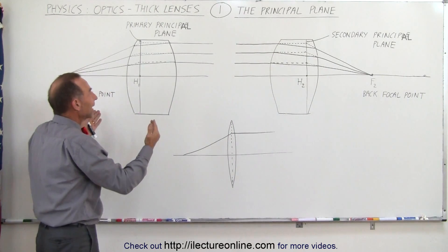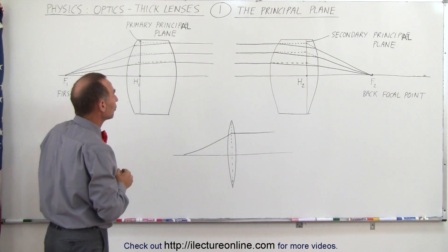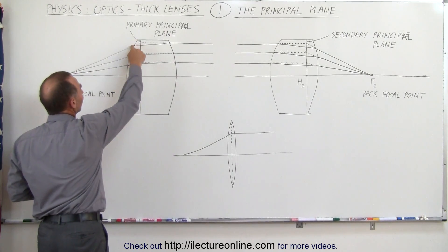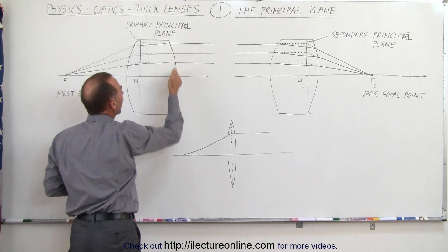But in a real lens or a thick lens we do not ignore the fact that the light bends on the front boundary as well as the back boundary.